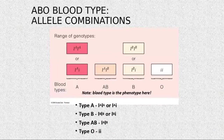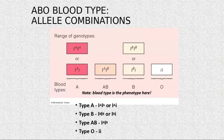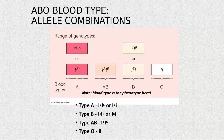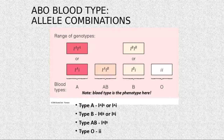Group A genotype is written as I-A, I-A or I-A, i. Group B is written as I-B, I-B or I-B, i. Group O is written as small ii. Group AB carries both I-A and I-B — both are dominant. This is what we call codominance.